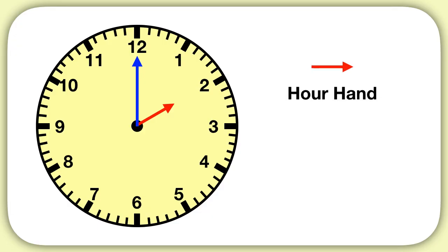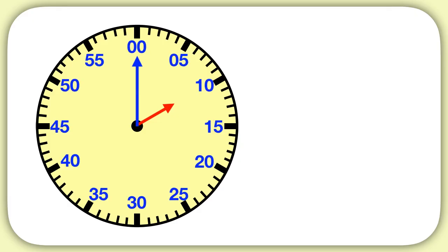You know this short hand is the hour hand, and the long one is the minute hand. You know the numbers around the clock represent the hours, and you can imagine skip counts of 5 to represent the minutes.